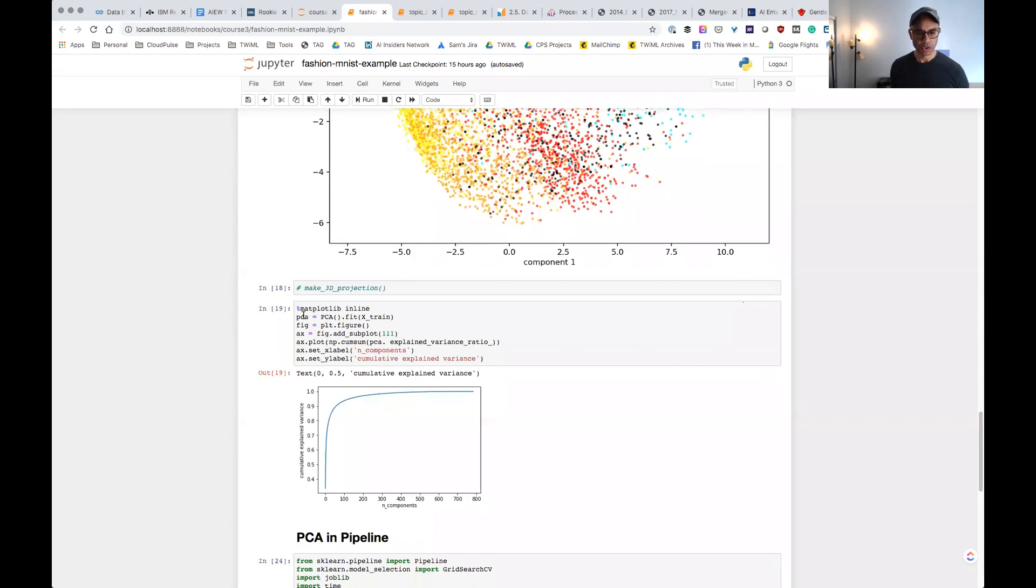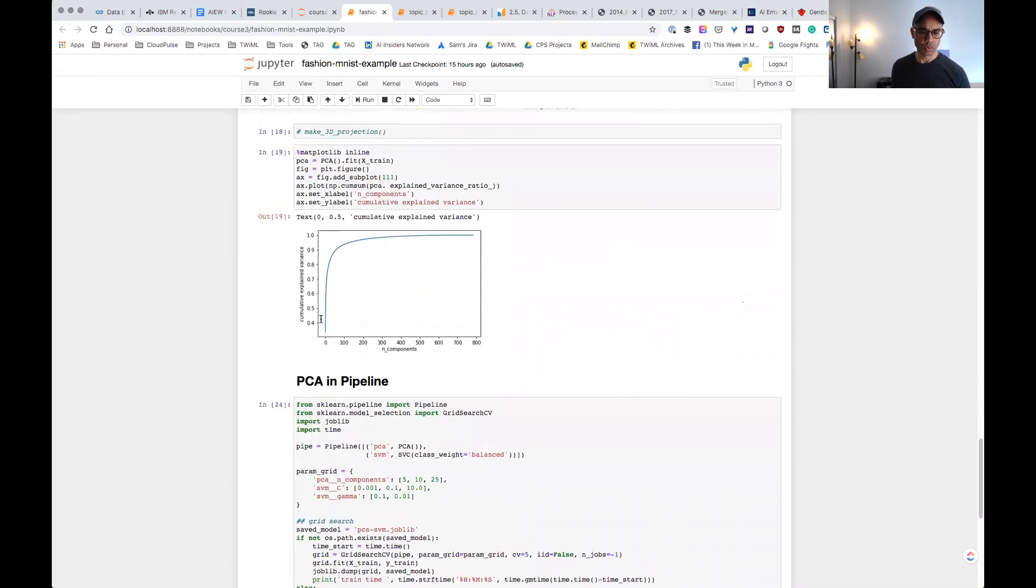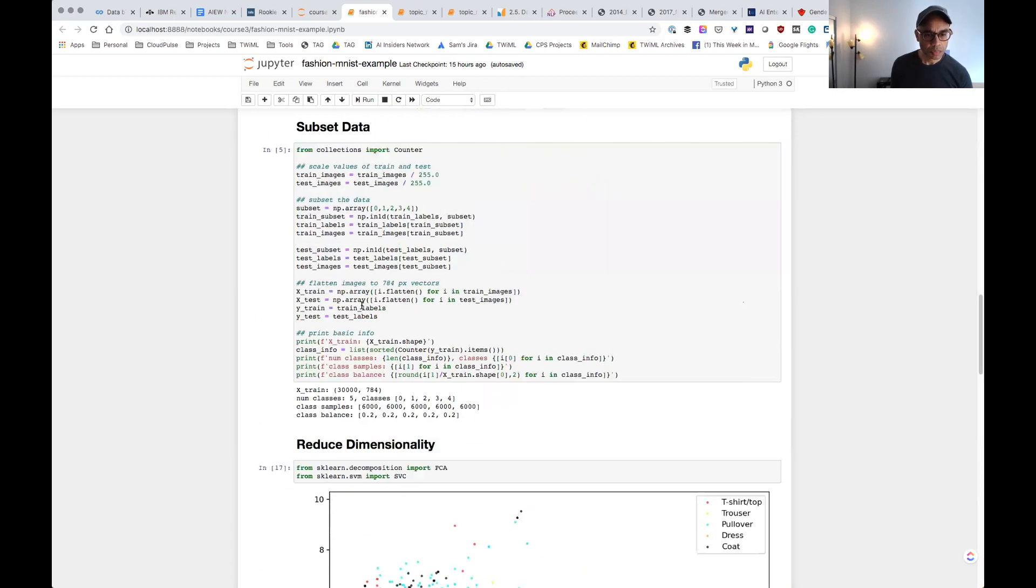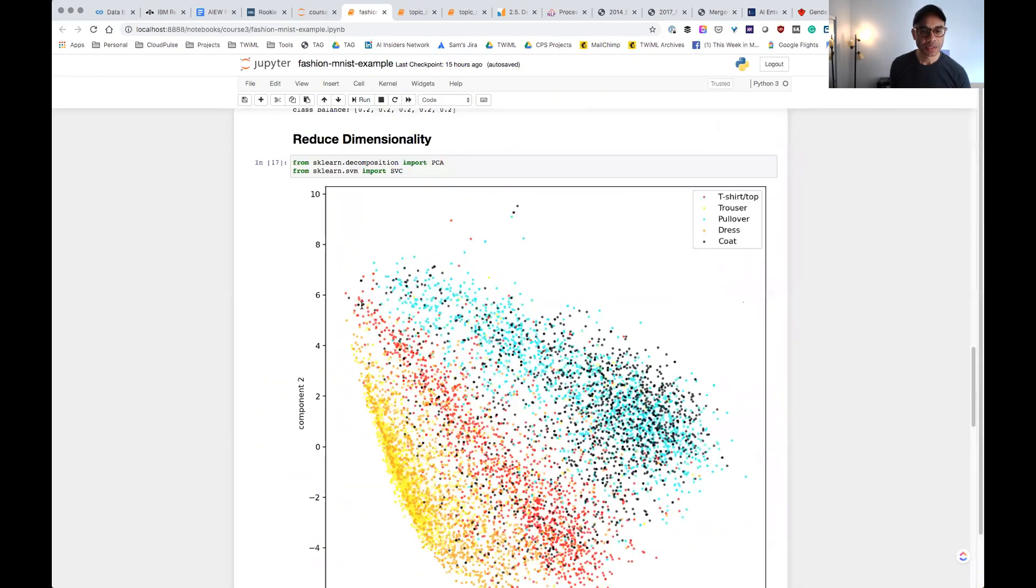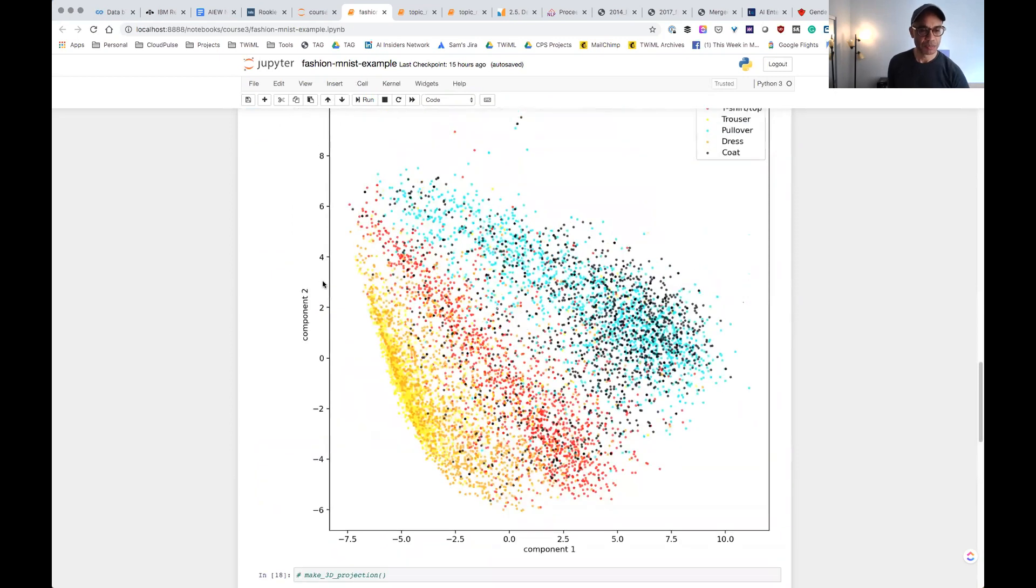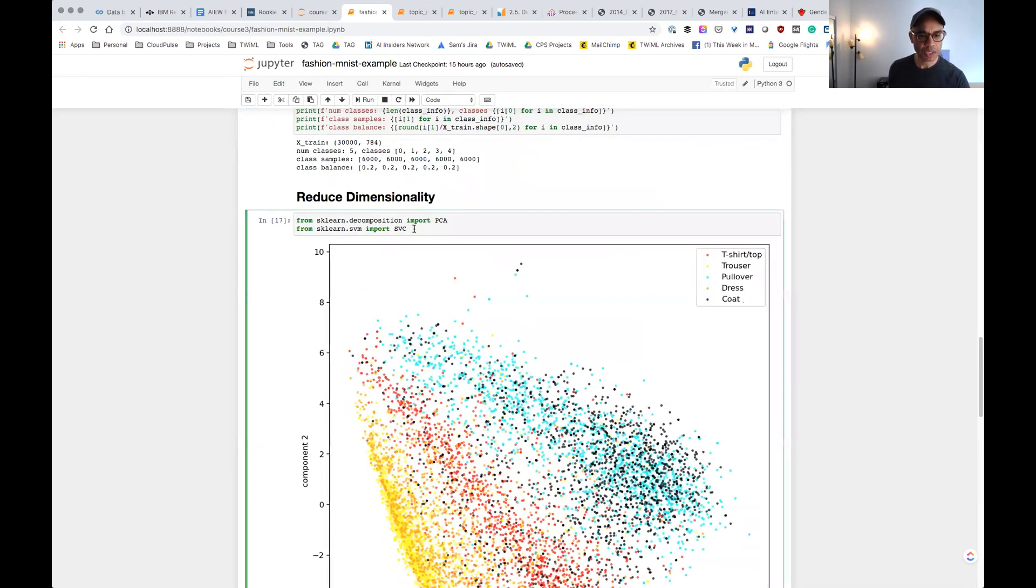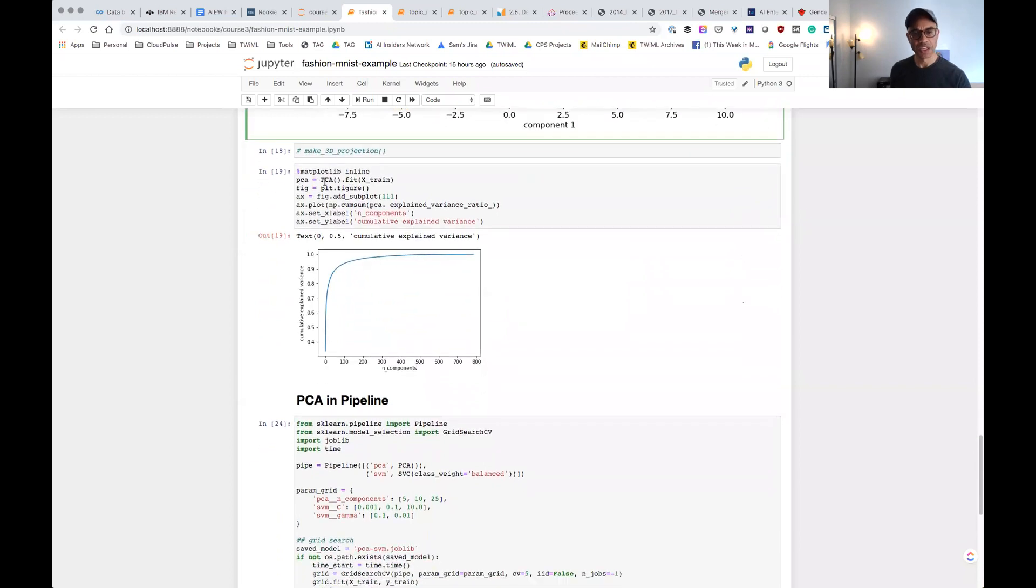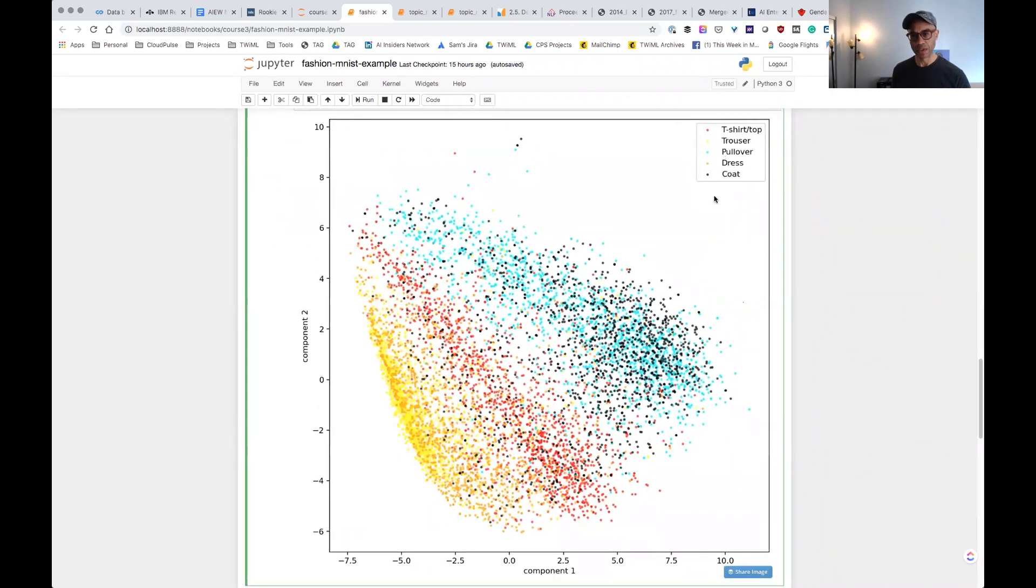So one of the videos goes through an example of doing dimensionality reduction for visualization using Fashion MNIST. They don't, this is another one where the code isn't available via the course, but I'm happy to share it. Yeah, I copied it into a notebook and I'm happy to share it with anyone that wants to play with it. With this example, basically what you're doing is you are loading in the Fashion MNIST dataset. Fashion MNIST, if I remember correctly, is 60,000 images that are broken up into 10 classes. The classes are t-shirts slash top, trouser, pullover, dress, coat, sandal, shirt, sneaker, bag, ankle boot. This is kind of an example of what the images look like. They're 28 by 28 images.